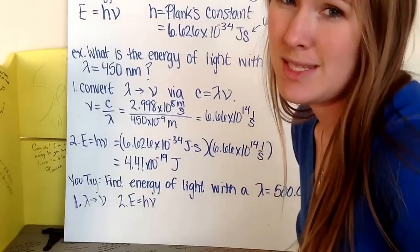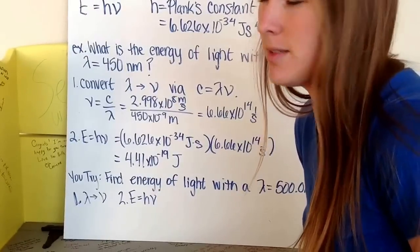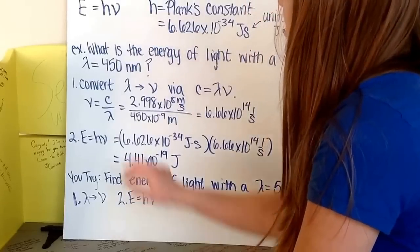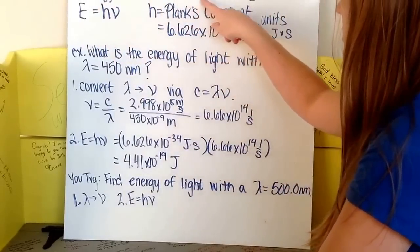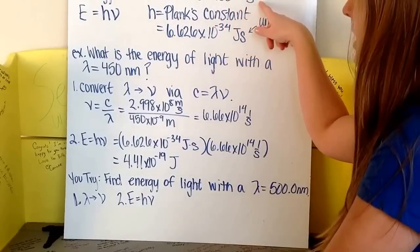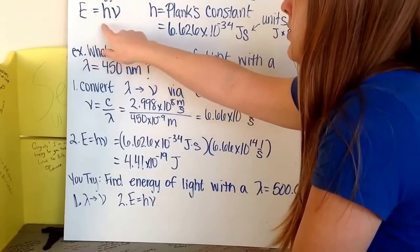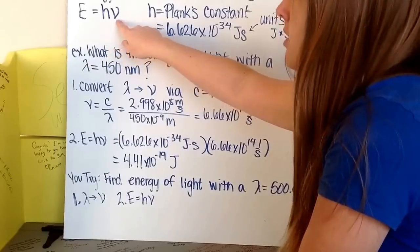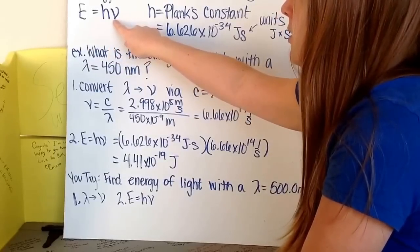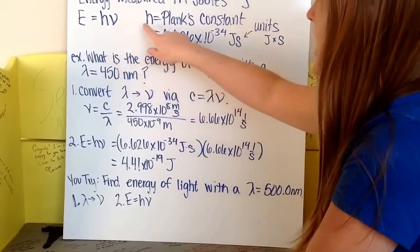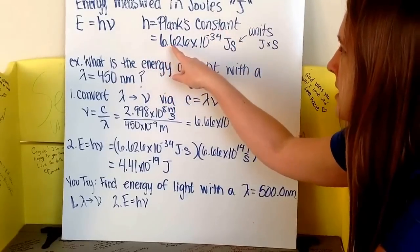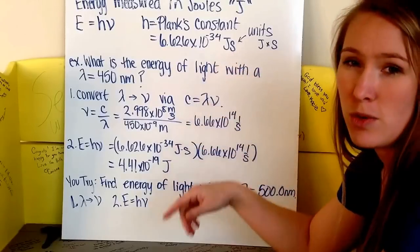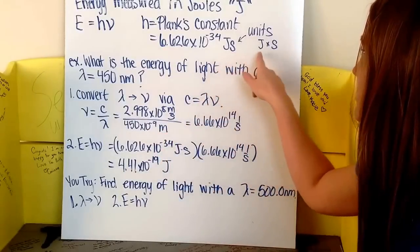This video is an addition to the video on light. Energy is another property that is directly related to light. Energy is measured in the units of joules, which are a capital J. Energy is equal to Planck's constant, which is the letter H, times the frequency of light, shown by the Greek letter nu. H is Planck's constant, 6.626 times 10 to the negative 34th joule seconds.